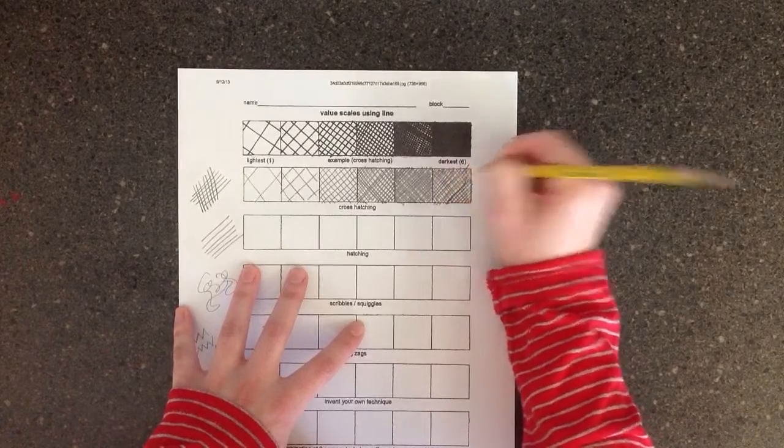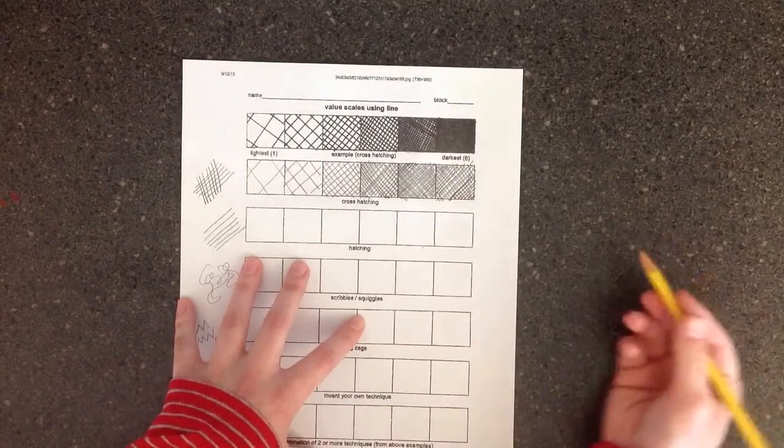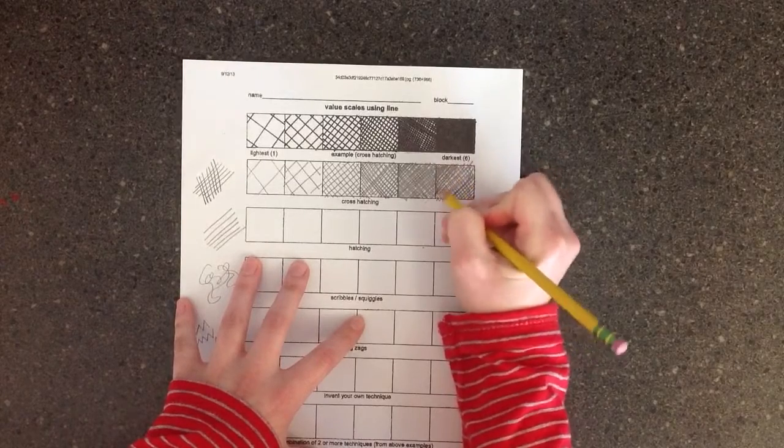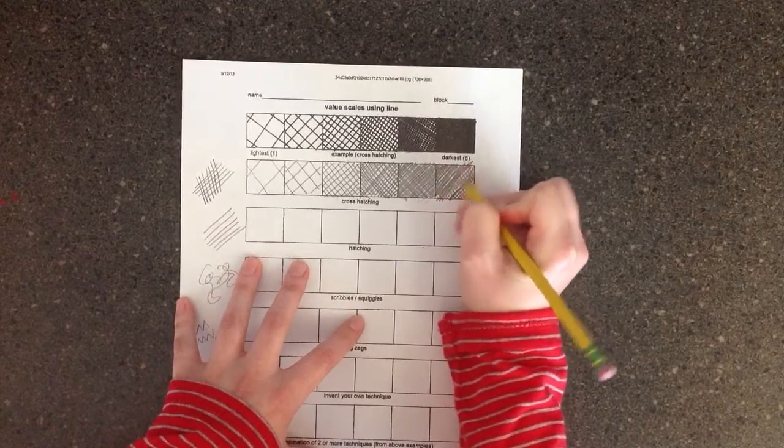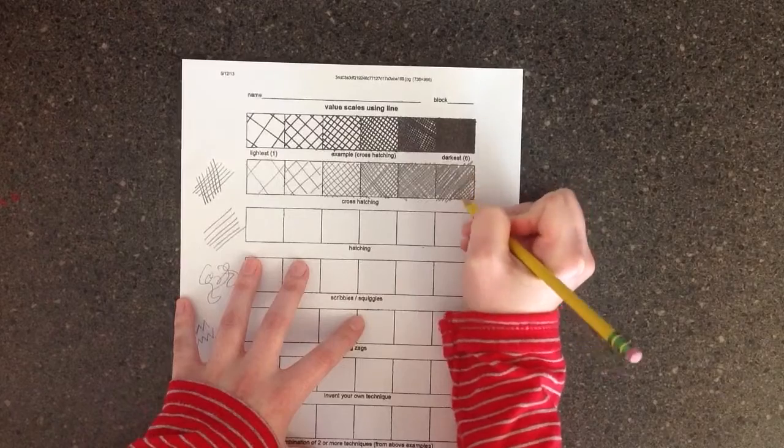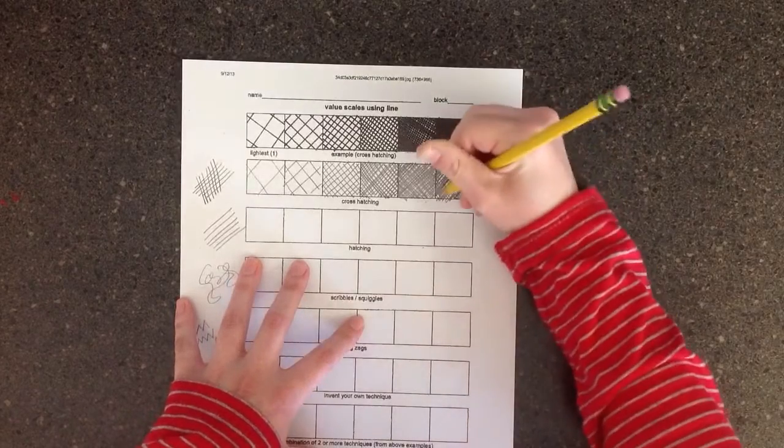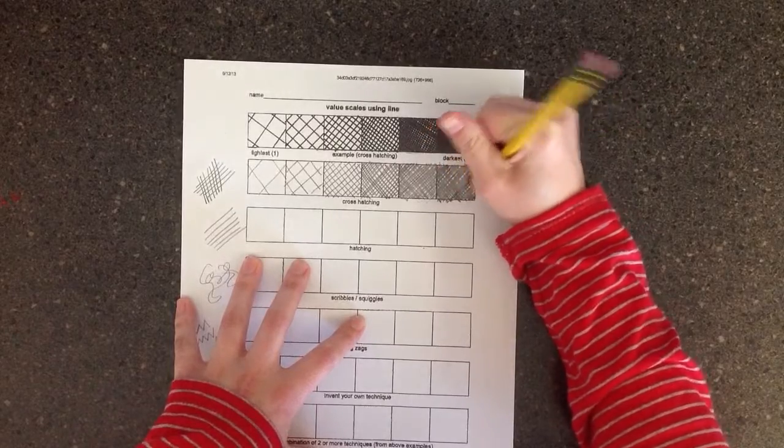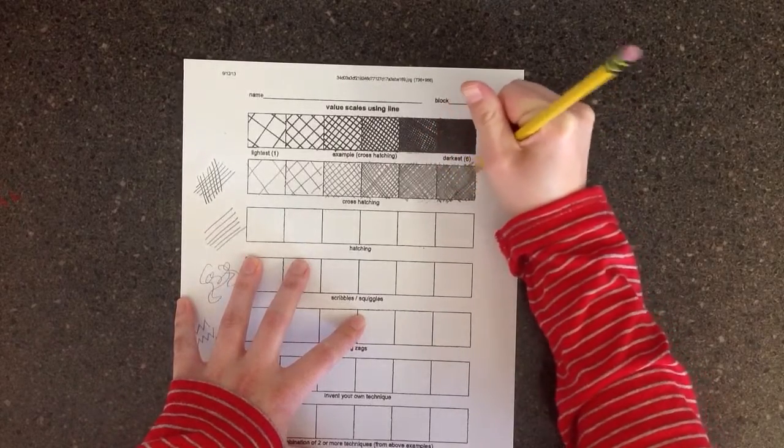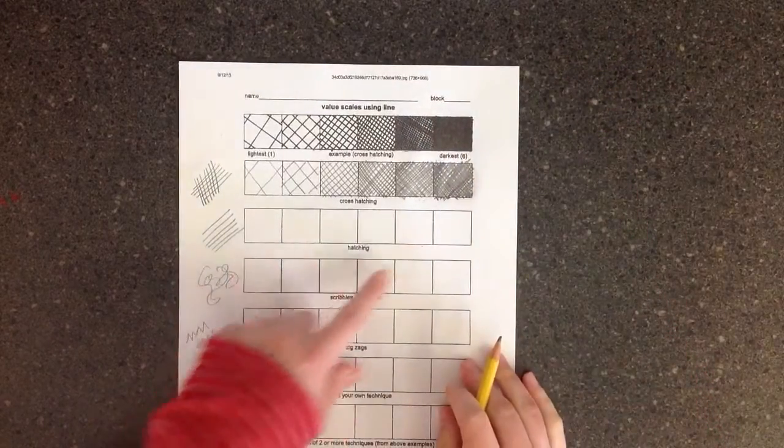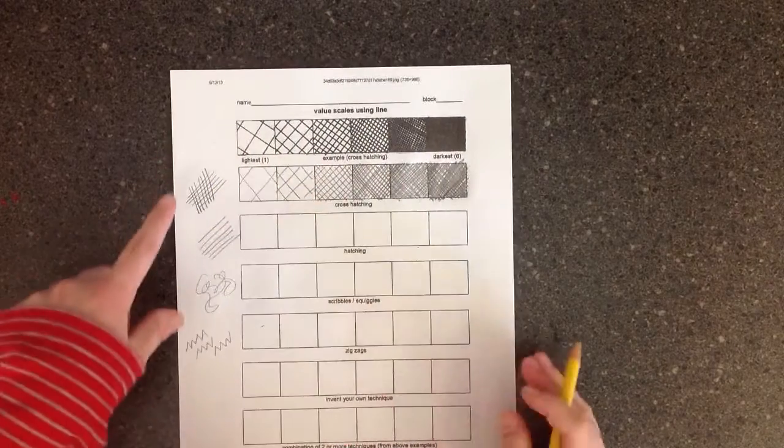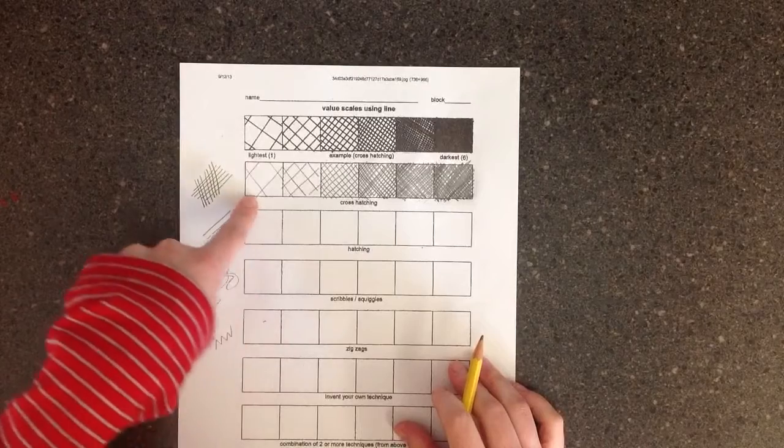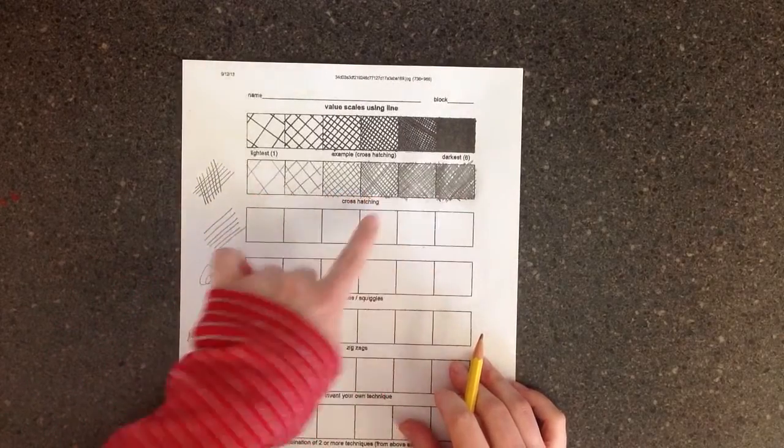And like I said, if you do it the first time and it's not dark enough, go over it again. Alright, so that's the first one. That's cross-hatching. And I just drew my lines. And to get darker, I put them closer together.